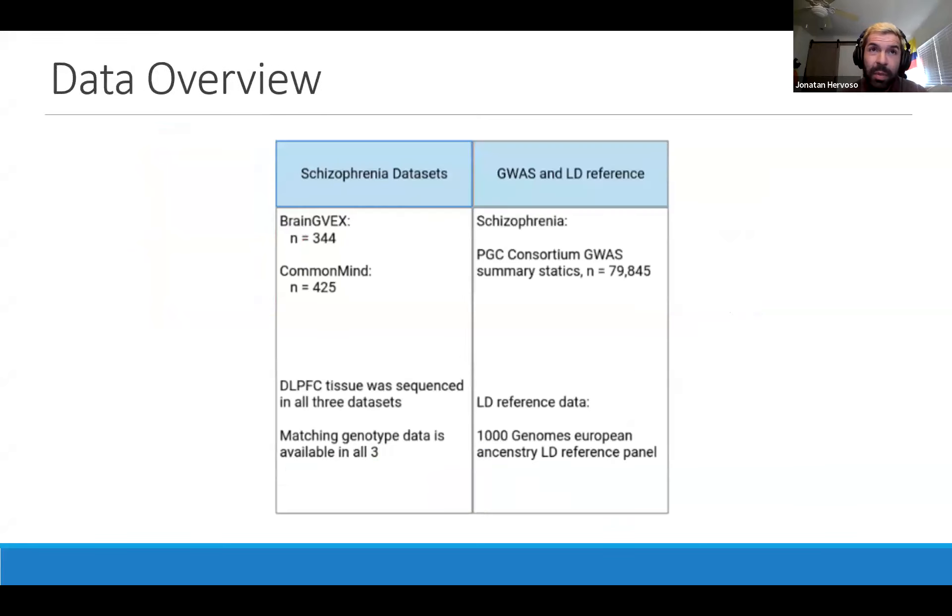I'll be presenting on two schizophrenia datasets, both from the PsychENCODE Consortium, one named the BrainGVEX dataset and the other the CommonMind. Both of these datasets are from dorsolateral prefrontal cortex brain tissue that were sequenced. Matching genotype data for both of these studies is available.